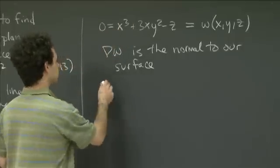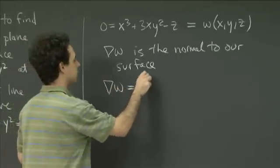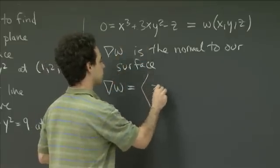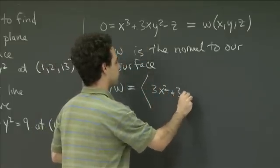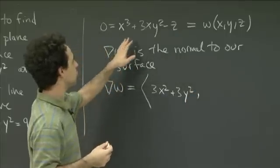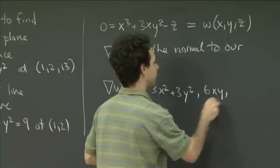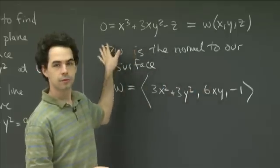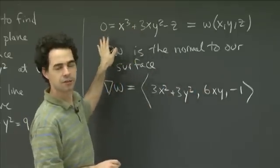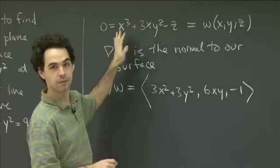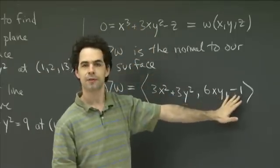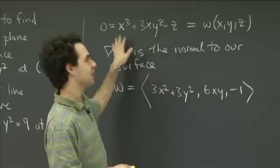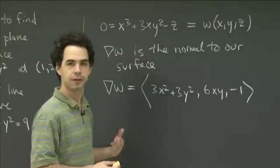So let's compute the gradient of w. Well, that's not hard to do. We just take the partial derivatives with respect to x, y, and z. So the partial derivative of w with respect to x is 3x squared plus 3y squared. The partial derivative with respect to y is 6xy. And the partial derivative with respect to z is minus 1. One thing to notice is that when you have the surface given in the form z as a function of x and y, you're going to bring the z over and you always have a minus 1 there when you set the problem up this way.